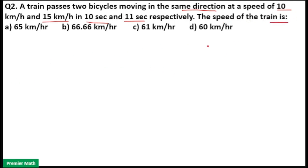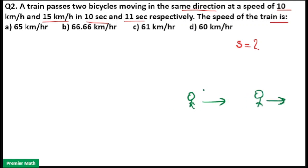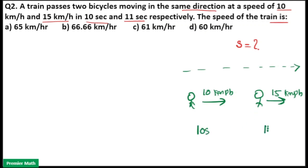We have to find out the speed of the train. Here two cyclists are traveling in the same direction with a speed of 10 km per hour and 15 km per hour, and a train is overtaking both cyclists. This train overtakes the first cyclist in 10 seconds and the second cyclist in 11 seconds.